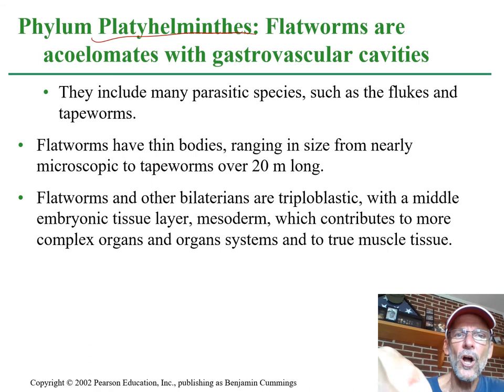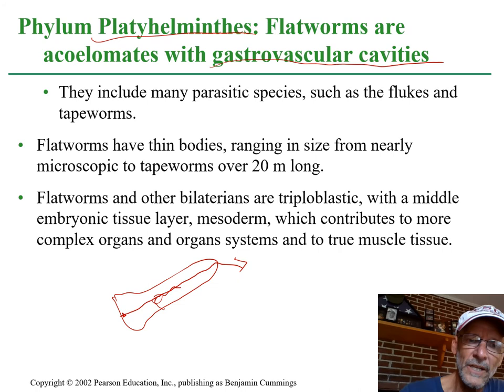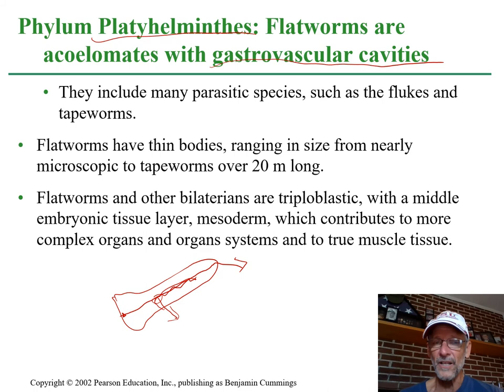Flatworms — the platyhelminthes — also have a gastrovascular cavity. In other words, they also don't bring food in one end and have undigested food come out the other end. They bring food in somewhere in the middle of their body, and if it doesn't get digested, it goes right back out. So maybe that's a feature they'll ask you to use to separate them from other groups.